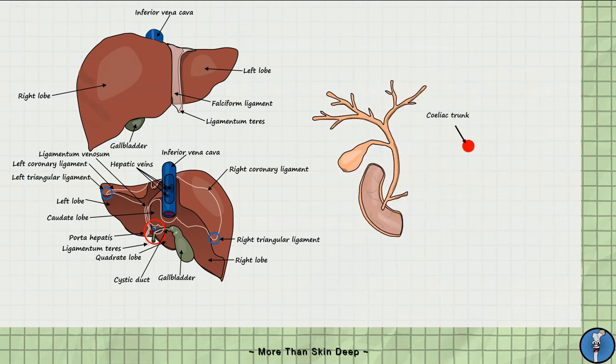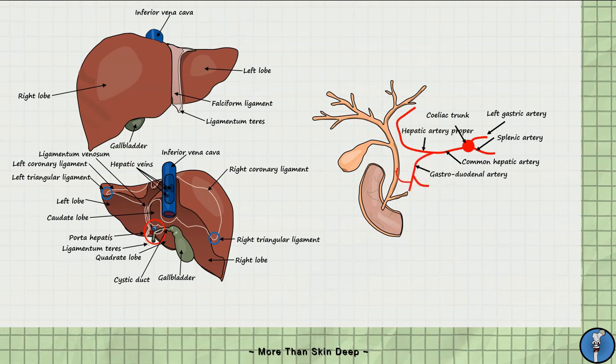The arterial supply of the gallbladder begins at T12 with the celiac trunk, which has three main branches: namely, the left gastric artery, splenic artery and the common hepatic artery. The common hepatic artery has two main branches, the hepatic artery proper and the gastroduodenal artery. The hepatic artery proper terminates as the right and left hepatic artery as it enters the porta hepatis. It is from the right hepatic artery that the cystic artery branches off to supply the gallbladder.